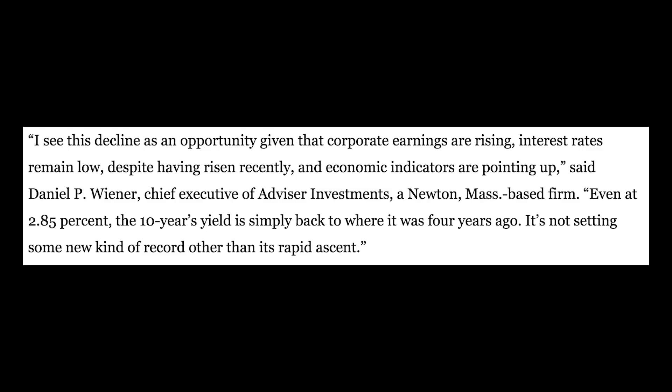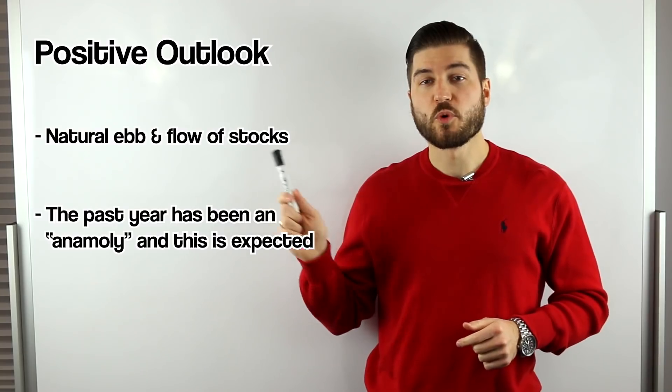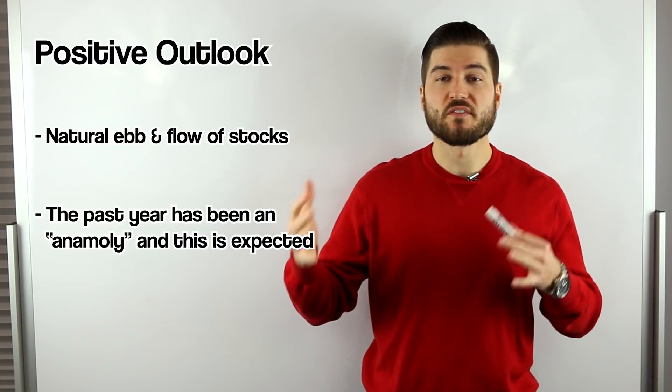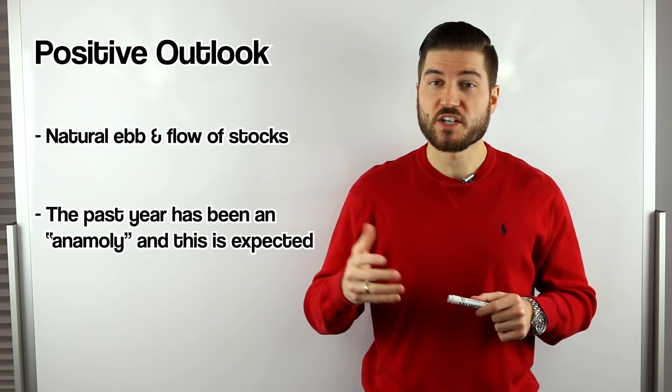So let's take a look at this screenshot. This is from Dan Weiner who's the chief executive of advisor investments. He says that he sees this decline as an opportunity given that corporate earnings are rising, interest rates remain low, and economic indicators are actually pointing up. So a lot of people actually confirm that, and he says that even at 2.85 percent the 10 year yield is simply back to where it was four years ago. It's not setting some new kind of record other than its rapid ascent. So he's referring to that 10-year bond yield that we were talking about. A few more positive notes is that many investors think that this bounce in the markets over the last week is actually part of the natural ebb and flow of stocks which could actually be true.